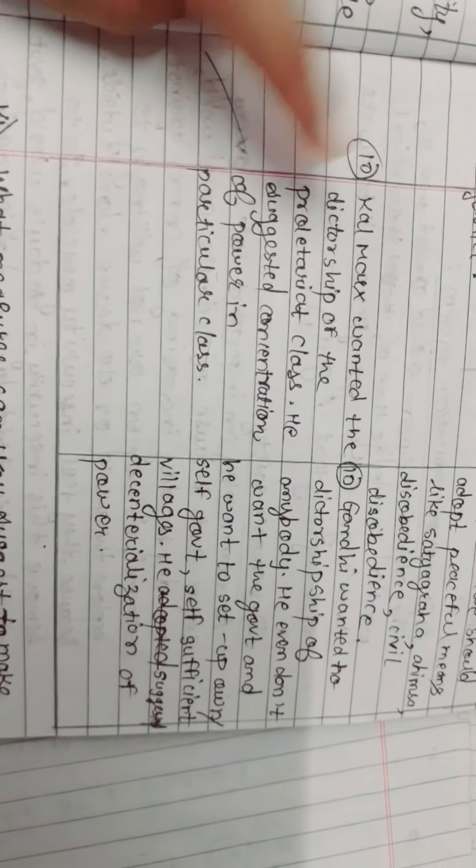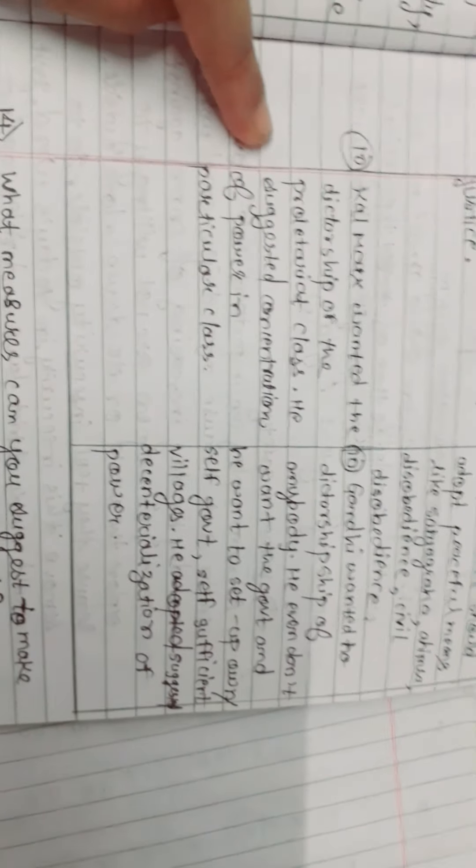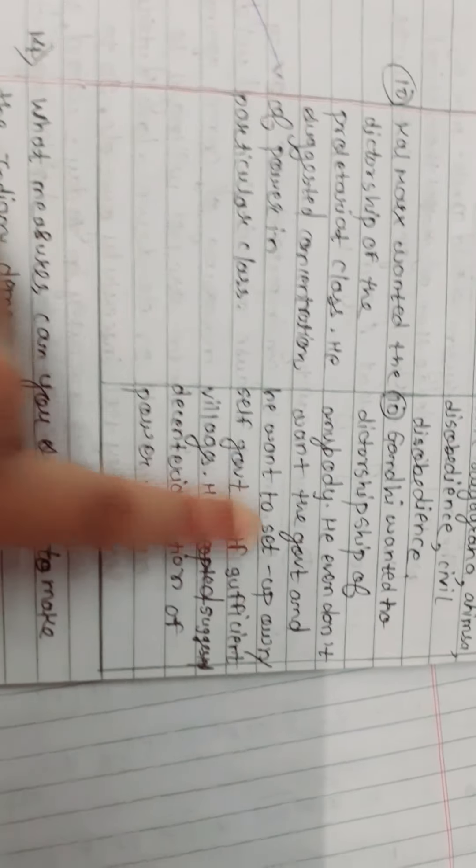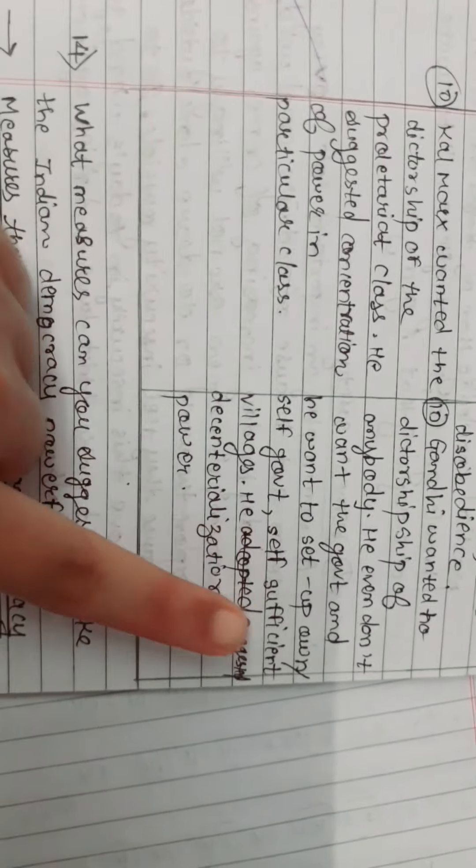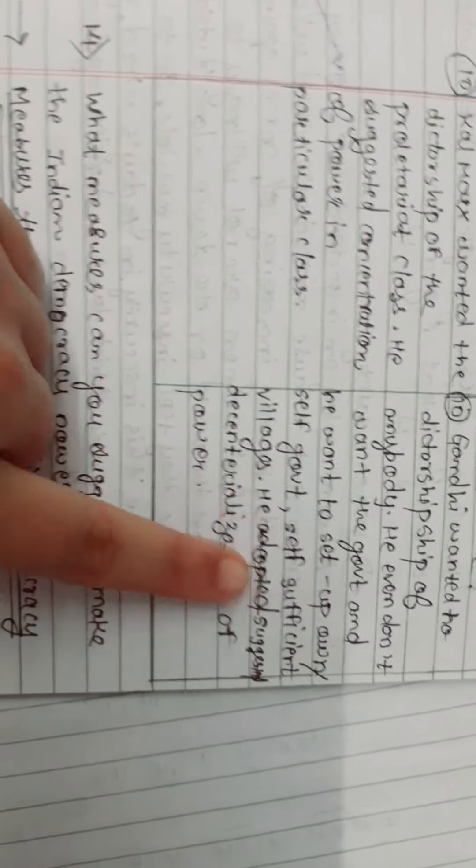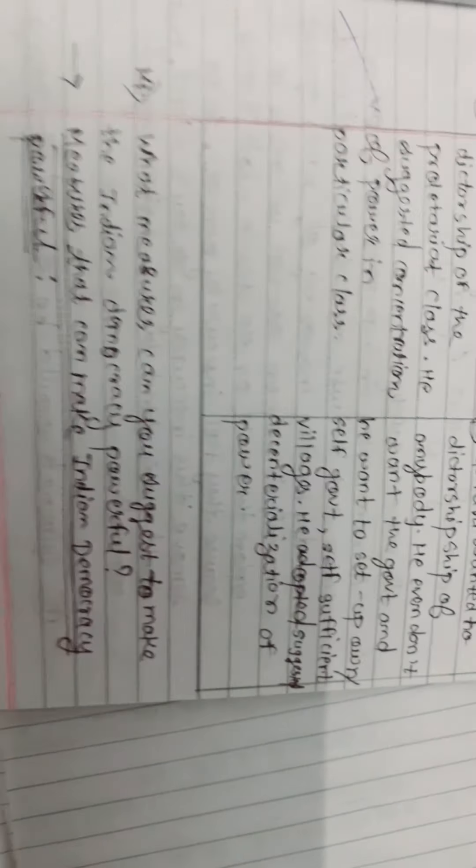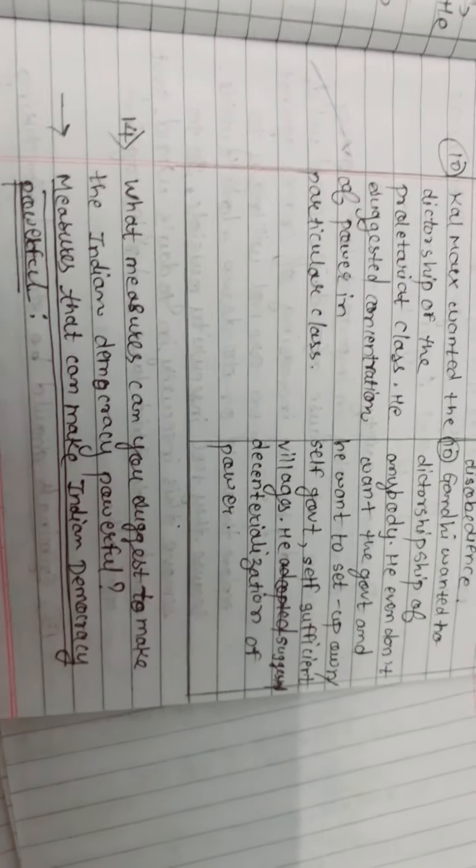Karl Marx wanted the dictatorship of the proletariat class. He suggested concentration of power in a particular class. But Mahatma Gandhi wanted the dictatorship of nobody. He didn't even want the government and wanted to set up self-government and self-sufficient villages. He suggested the decentralization of power.